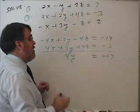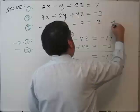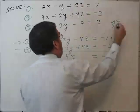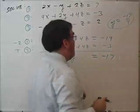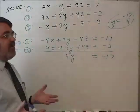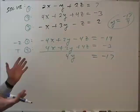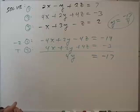I have 4y equals negative 17. So divide both sides by 4. y equals negative 17 over 4. All right, so there's one solution. We know what y theoretically is.